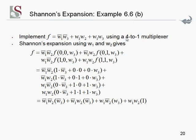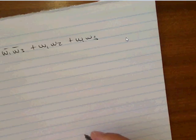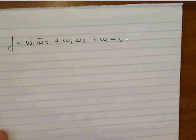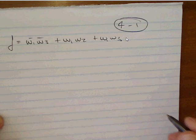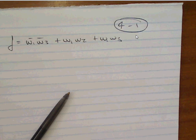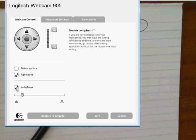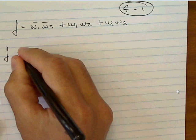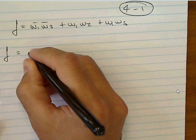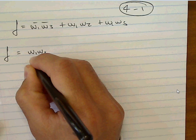Starting with F = NOT W1 · NOT W3 + W1·W2 + W1·W3, and using a 4-to-1 multiplexer: we need two select lines, so we extract W1 and W2. Shannon's theorem for two variables gives four selection options corresponding to the four input combinations: W1=0,W2=0; W1=0,W2=1; W1=1,W2=0; and W1=1,W2=1.